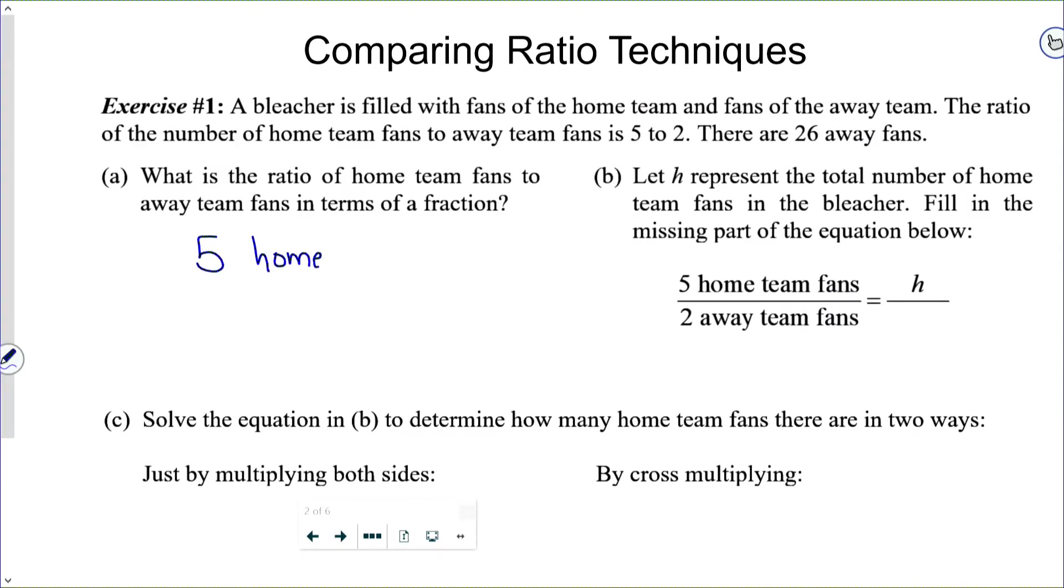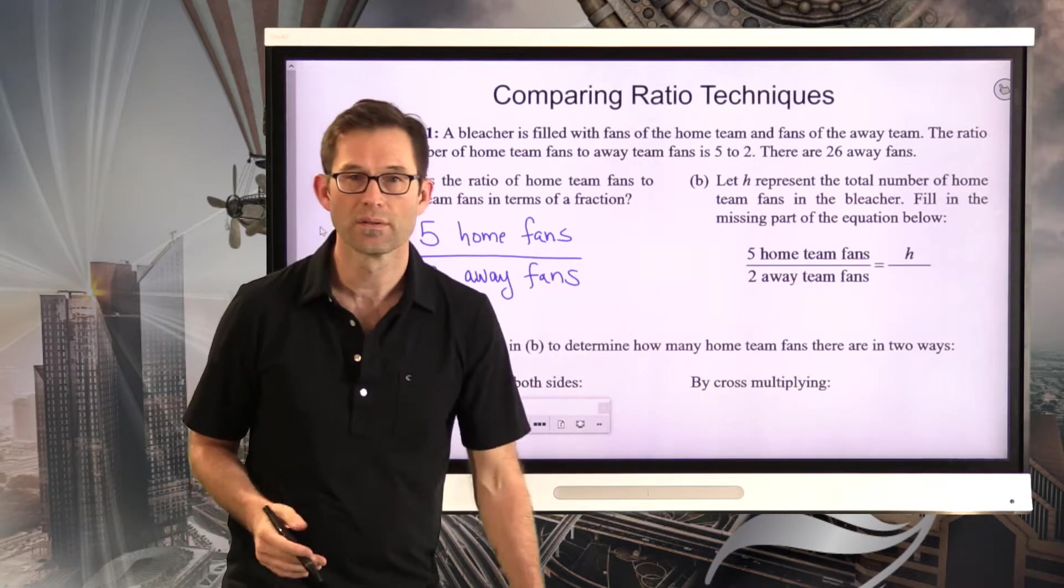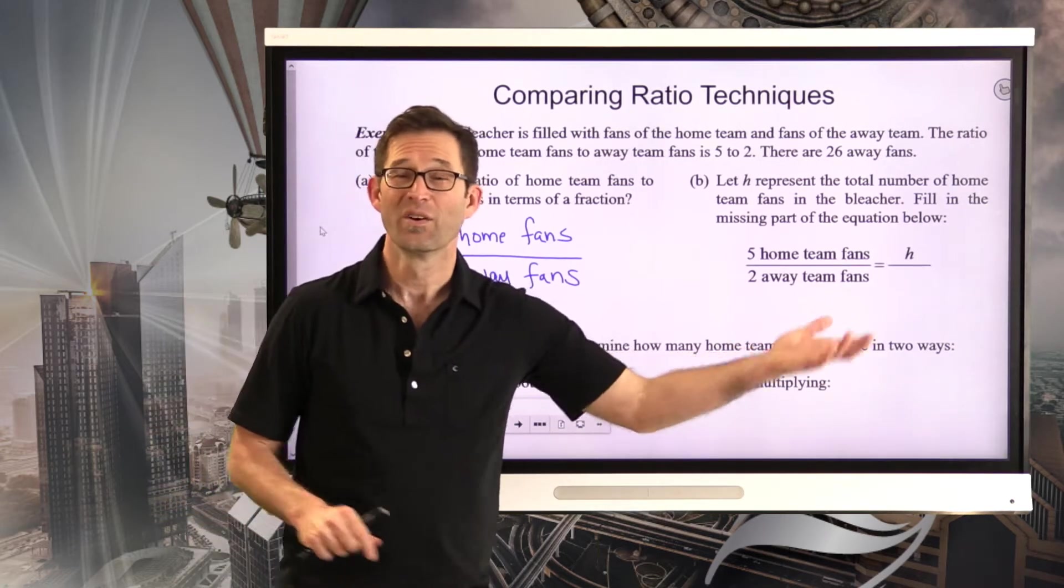Well this should be very easy. We were told that the number of home team fans to away team fans is 5 to 2, so that's basically it. 5 home fans to 2 away fans.